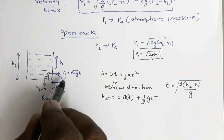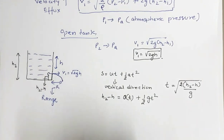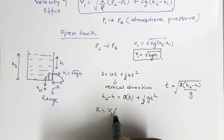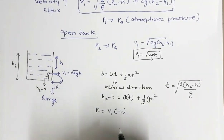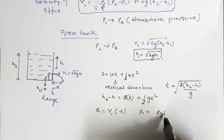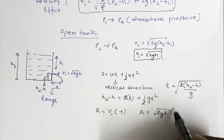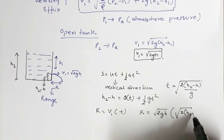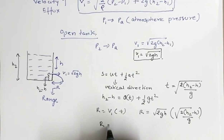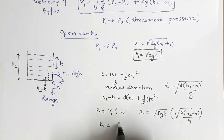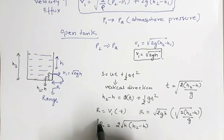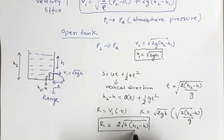The horizontal velocity is the square root of 2gh. The range equals horizontal velocity multiplied by time taken to reach the bottom point. So R equals the square root of 2gh multiplied by the square root of 2(h2 minus h)/g, which gives range equals 2 times the square root of h(h2 minus h).